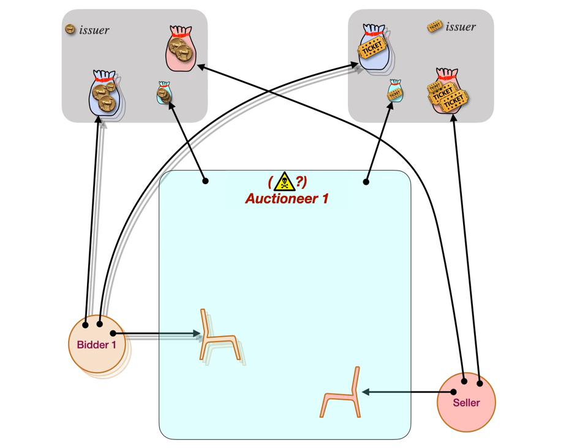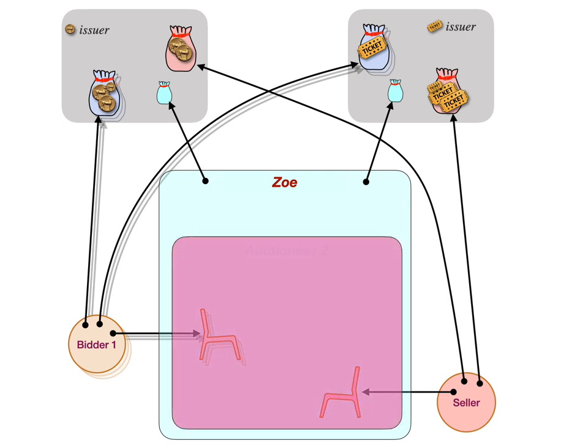For an escrow exchange, which is simple, we can use a highly vetted, highly reusable piece of code. But for an auctioneer and a zillion other special-purpose smart contracts, we don't want to have that level of risk. Instead, we create the ZOE framework, where ZOE itself is, in some sense, a generalization of the escrow exchange agent we've already seen. It's a smart contracting framework such that a smart contract — like a second-price auction — then runs on top of, within, the ZOE framework.